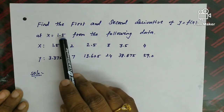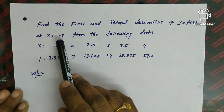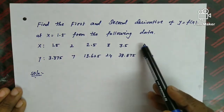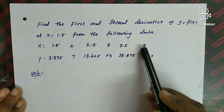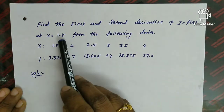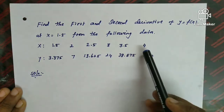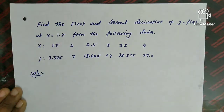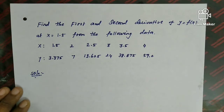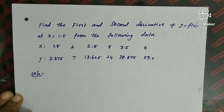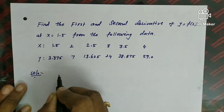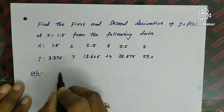If x = 1.5 is the beginning value of the given data, we apply Newton's forward difference formula. If the point were at the end of the data, we would use Newton's backward difference formula. We have two cases: P value is 0, and P not equal to 0, each using a different formula.